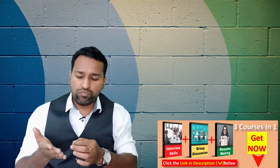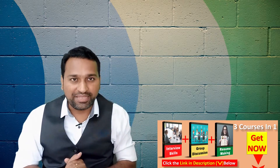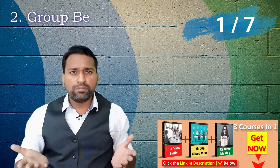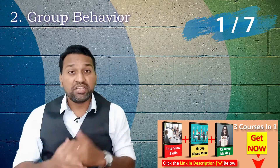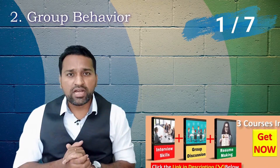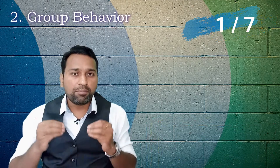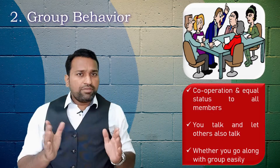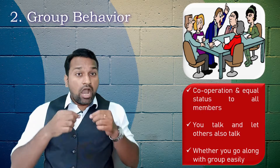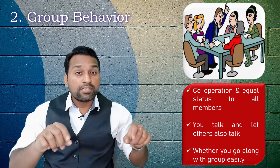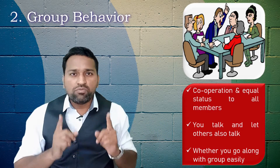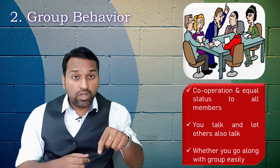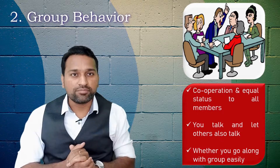They calculate a total and decide the final ranking. The next parameter is group behavior — how you behave in a group of people. In a face-to-face interview it is very hard to see how you behave in a group situation. In group behavior, they see how you cooperate with group members, whether you give equal status to all members, and whether you talk and also let others talk.